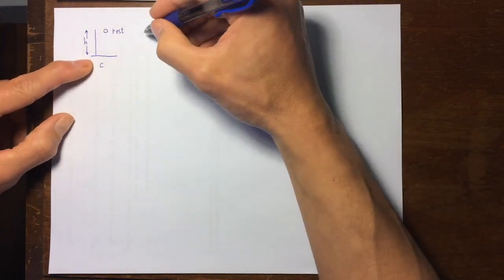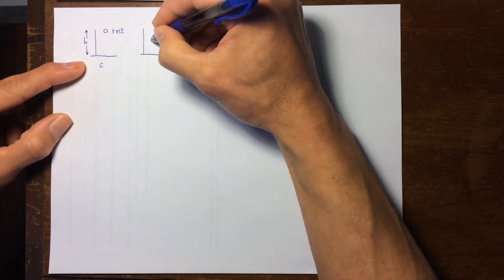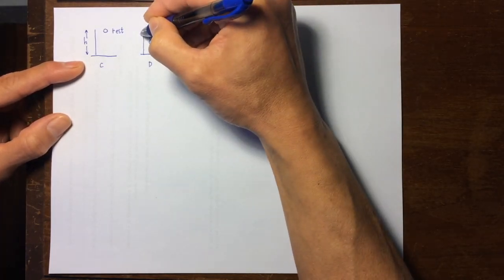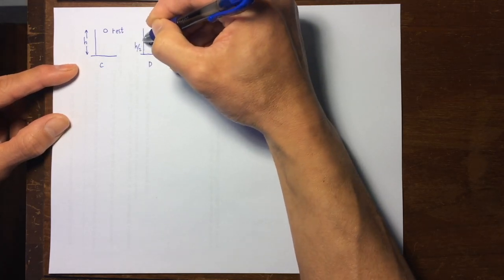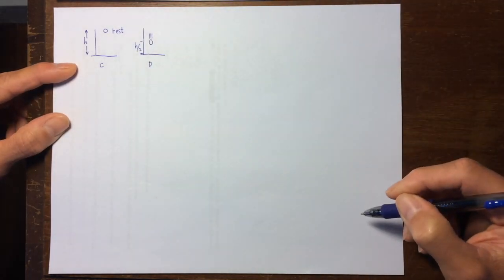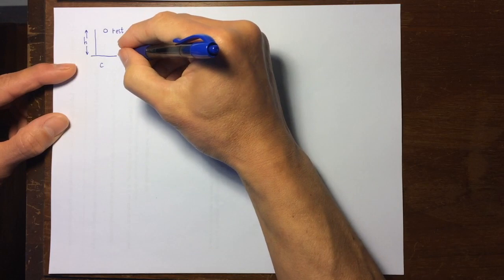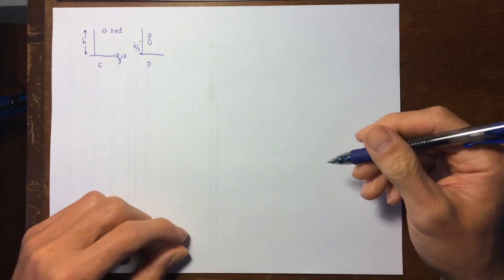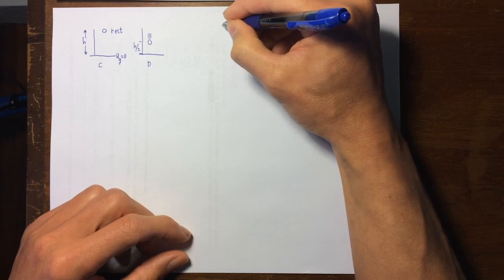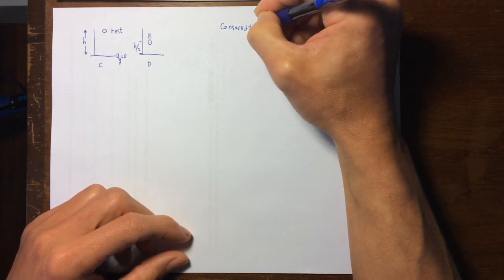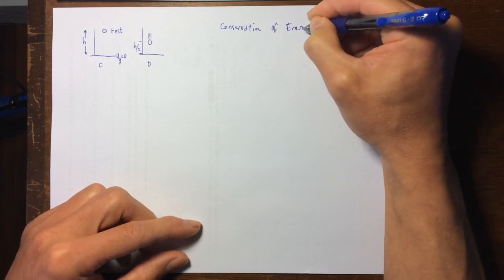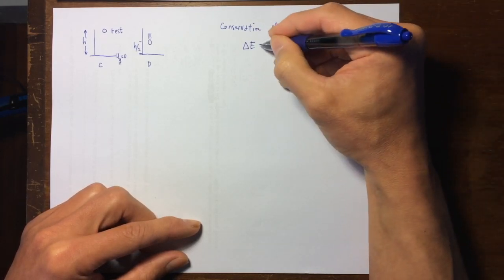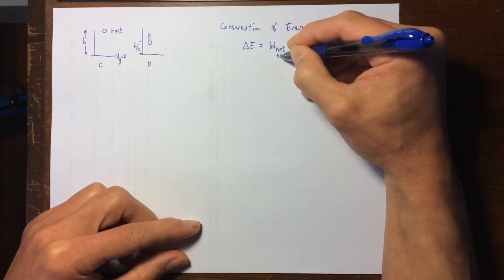So here's C, and D is where the ball is at only H over 2 from the floor. Remember that we chose gravitational potential energy to be zero at the tabletop for this problem. The conservation of energy states that the total energy can only change if there is work done by a net external force. But from C to D, there is no external influence — no net external force.